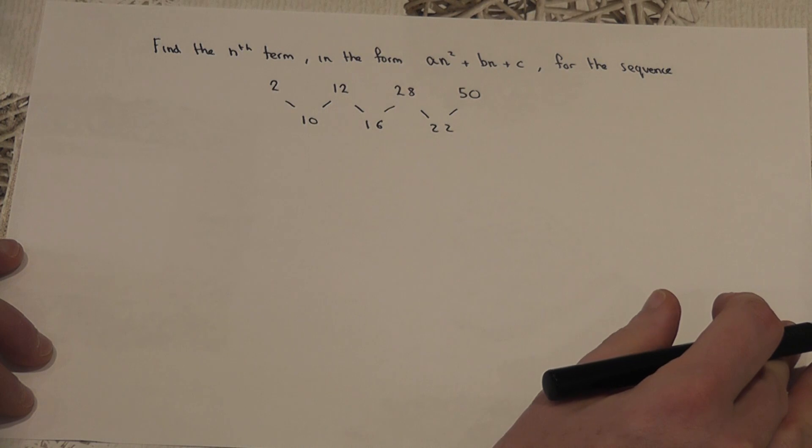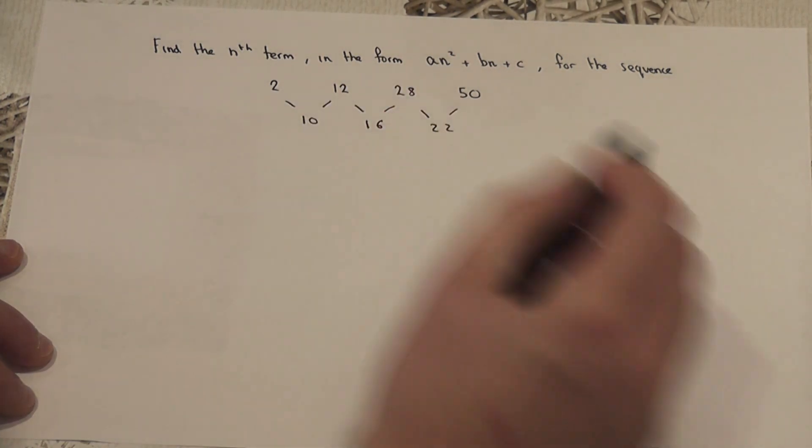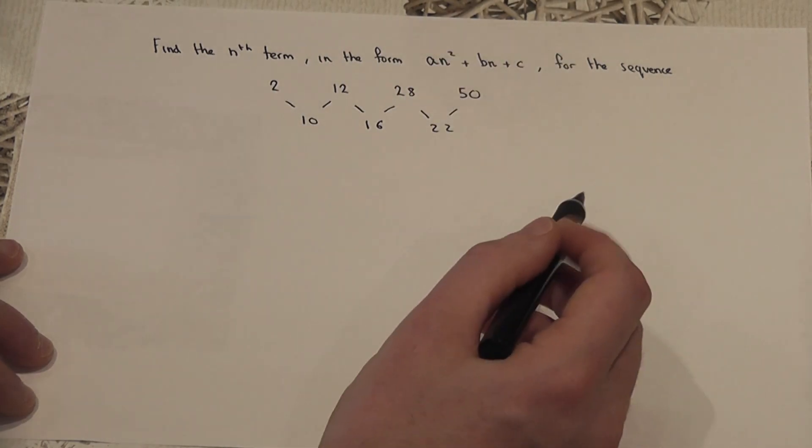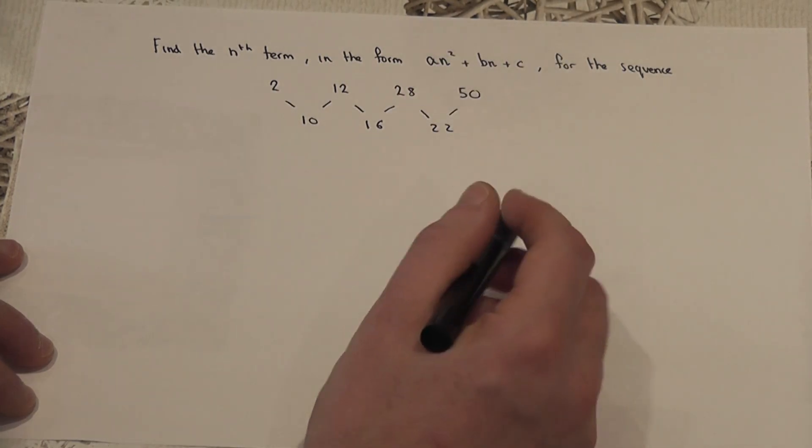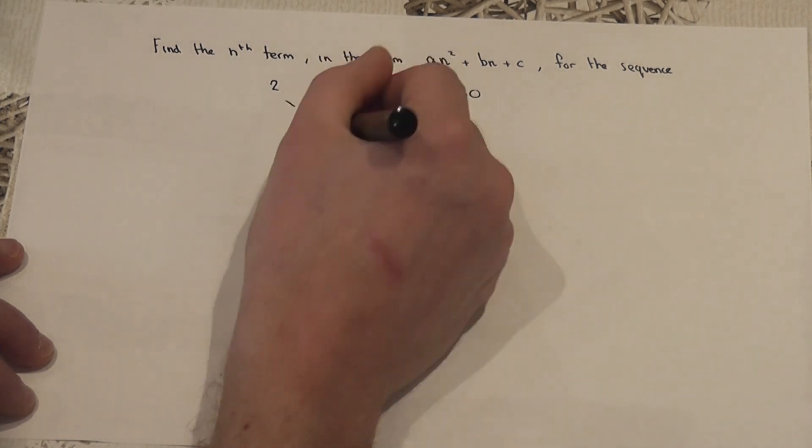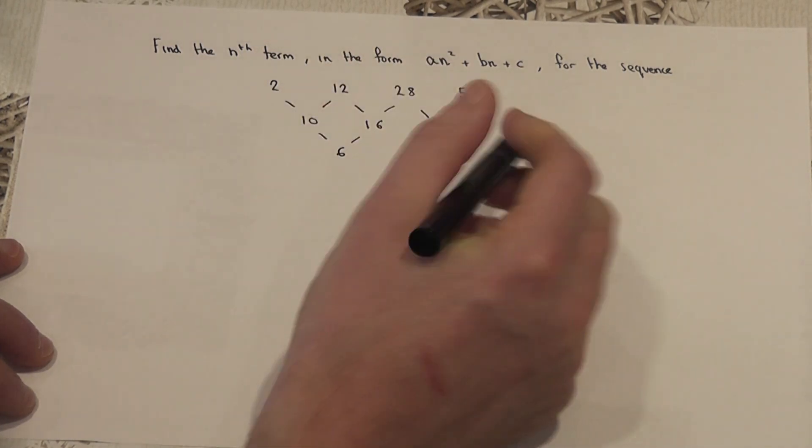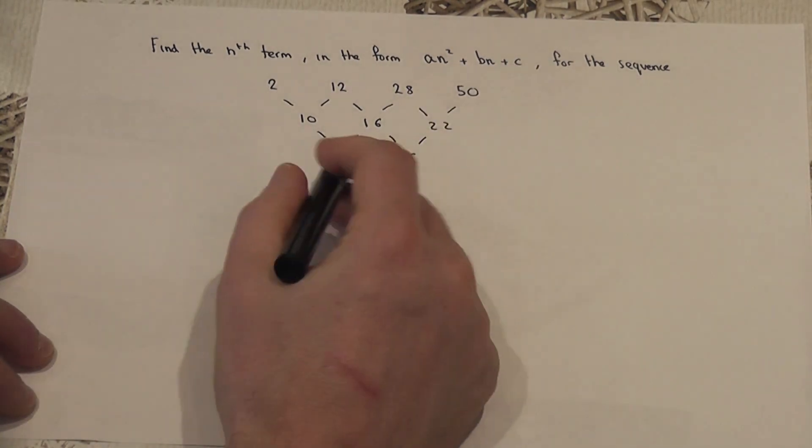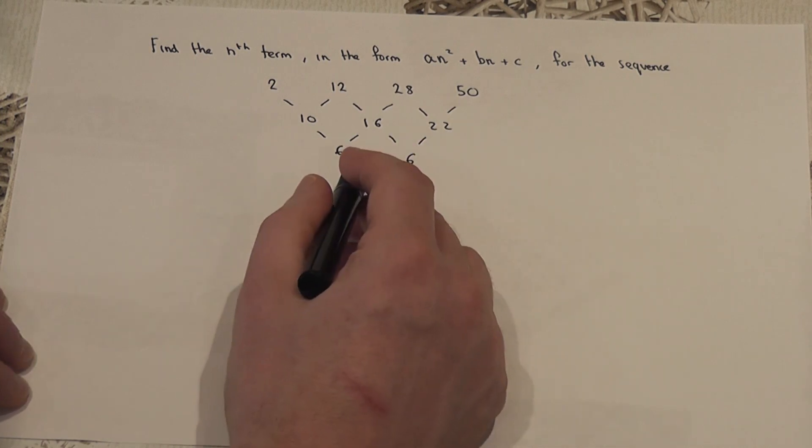Now, when it's a linear sequence, these are always the same number. But in an n squared or quadratic sequence, if we then do the second difference, 16 take away 10 is 6, and 22 take away 16 is 6. The second difference is constant, in this case 6.